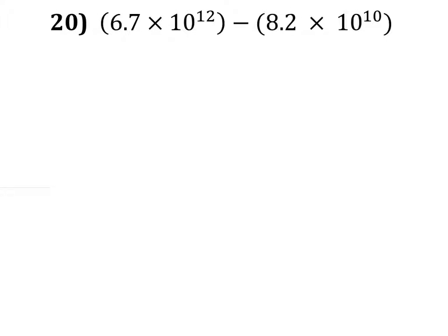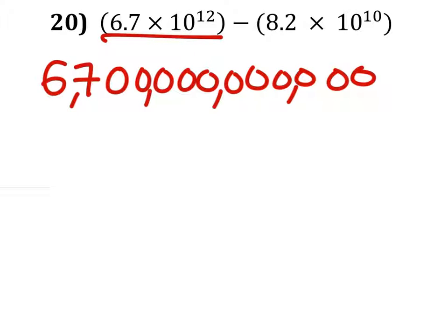So when adding and subtracting, we place our numbers in standard form and then subtract them or add them. So I got a 6 and a 7 with 11 zeros. And there's our first number.